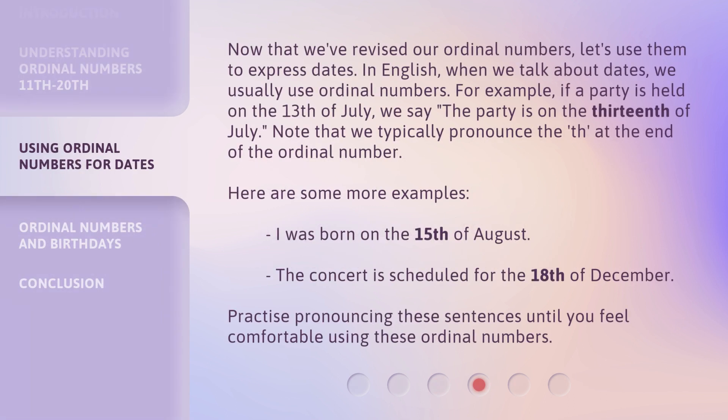Now that we've revised our ordinal numbers, let's use them to express dates. In English, when we talk about dates, we usually use ordinal numbers. For example, if a party is held on the 13th of July, we say, 'The party is on the 13th of July.' Note that we typically pronounce the TH at the end of the ordinal number. Here are some more examples: 'I was born on the 15th of August.' 'The concert is scheduled for the 18th of December.' Practice pronouncing these sentences until you feel comfortable using these ordinal numbers.